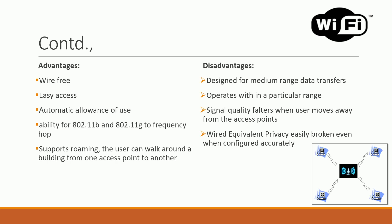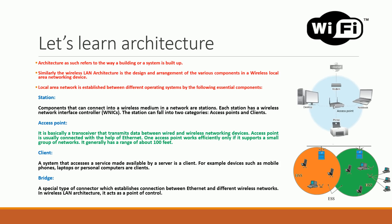Advantages of Wi-Fi: it is wire-free, easy to access, and allows automatic usage — you don't need to struggle to get connected. 802.11b and 802.11g support frequency hopping. Roaming is also permitted, meaning you can move from one Wi-Fi network to the next and remain connected. Disadvantages: range of data transfer is medium, distance covered is minimal, and most importantly, signal quality degrades as you move away from the access point. Security vulnerabilities are also a major concern.